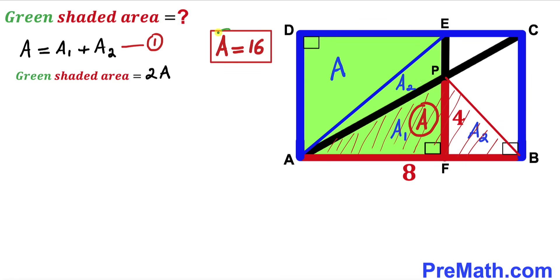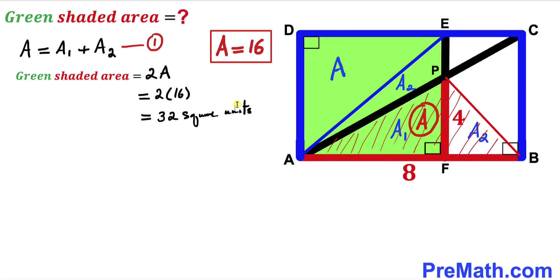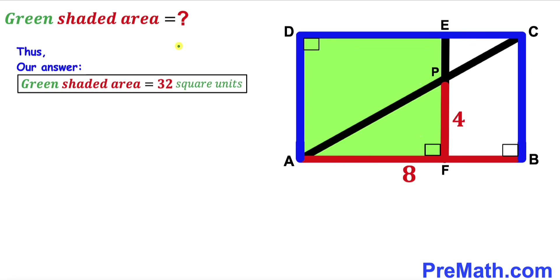Our uppercase A value turns out to be 16 square units. Recalling our equation: the green shaded region area equals 2 times uppercase A. Substituting, we get 2 times 16, which equals 32 square units. After all the calculations and manipulations, the area of the green shaded rectangle is 32 square units — and that's our final answer.